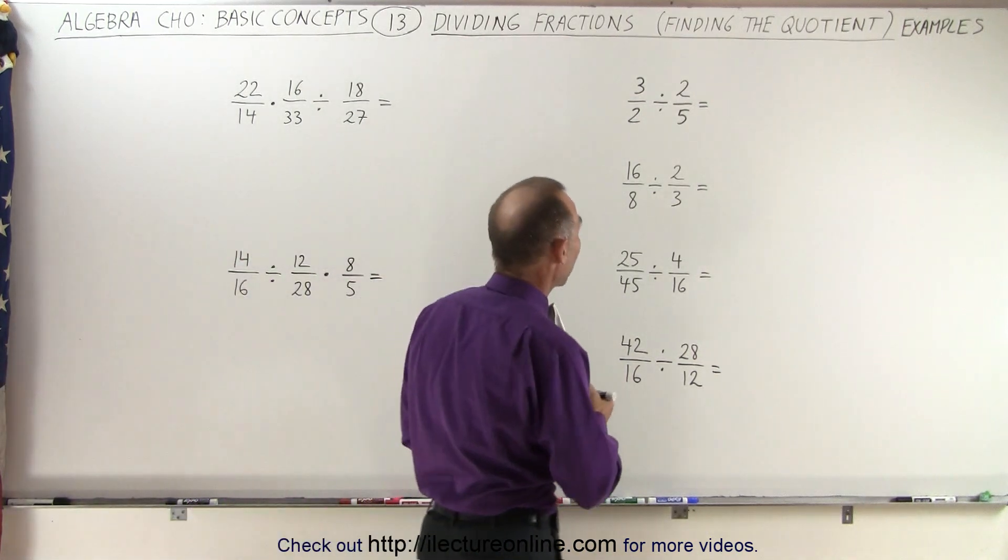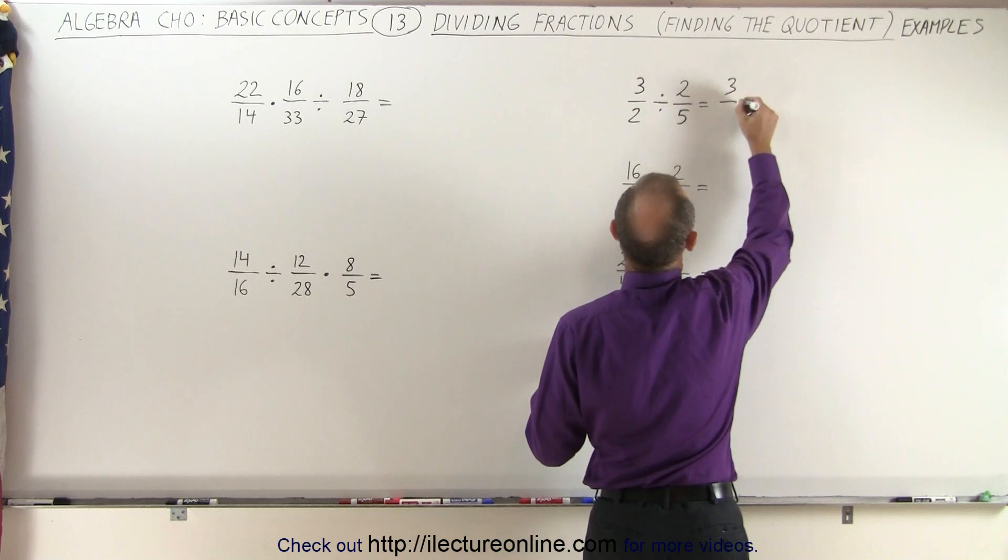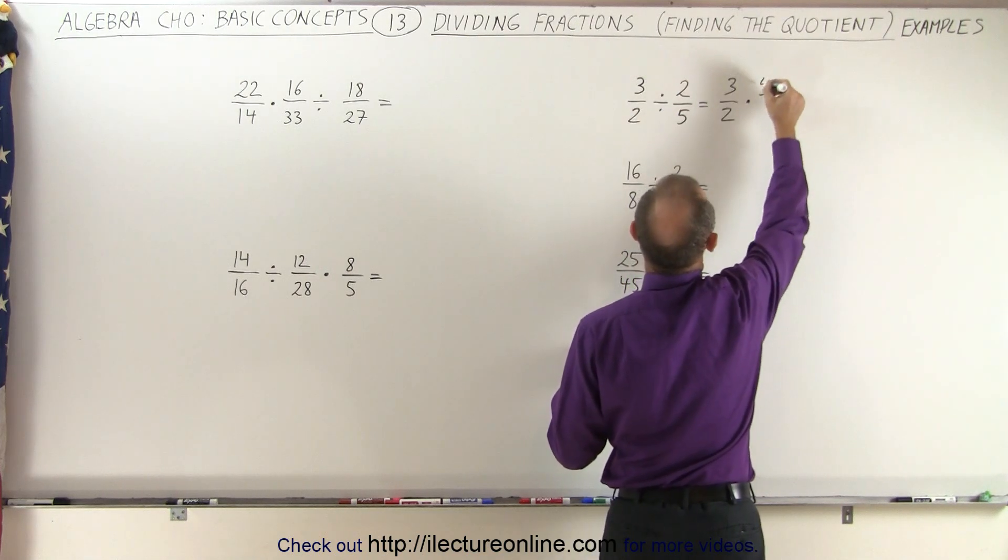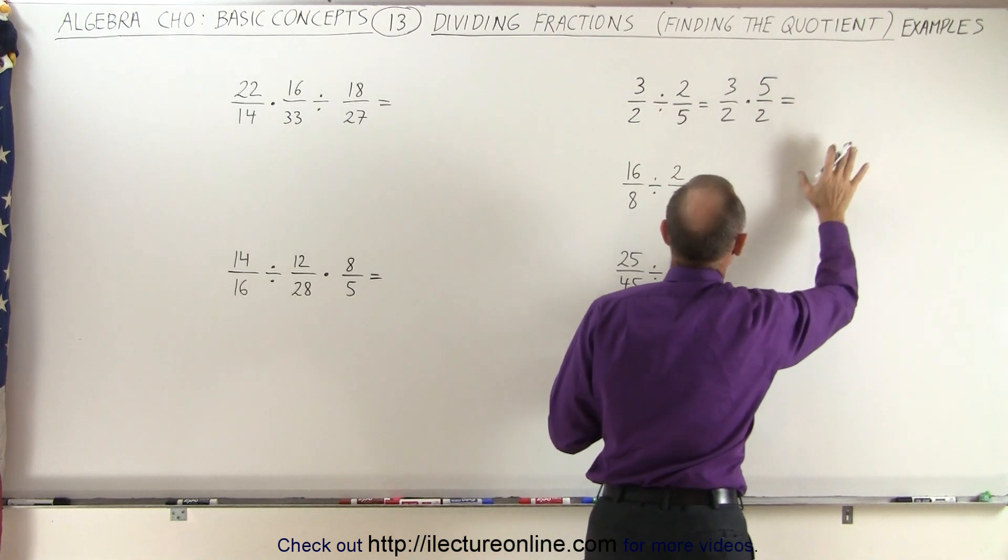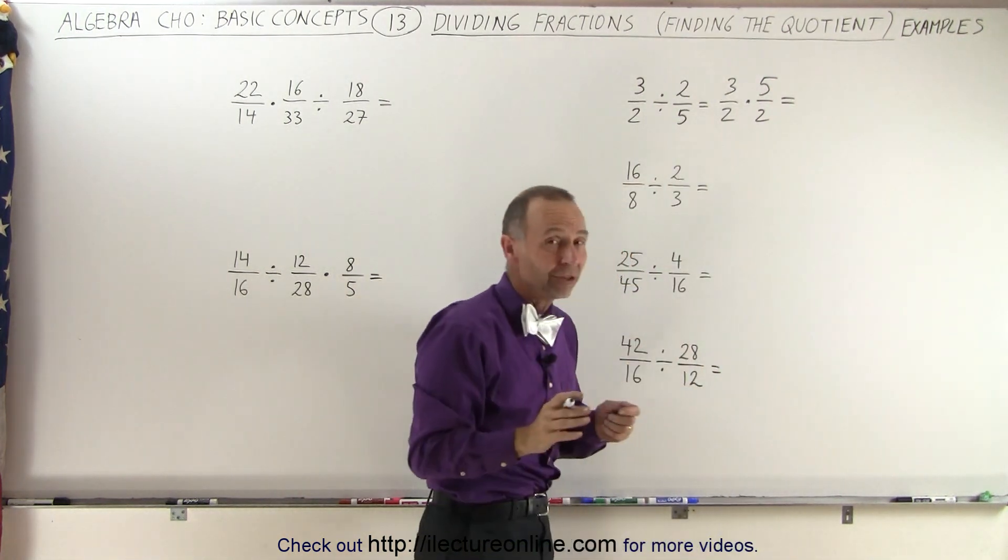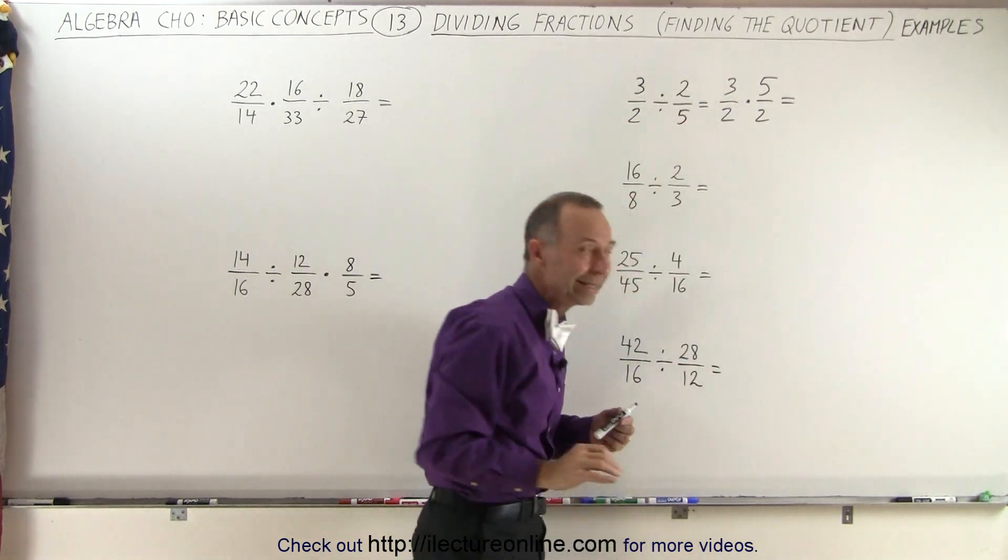So in this case, we have three halves divided by two fifths, so this can then be written as three over two times the inverse, which would be five over two. Now before we continue on, what you have to be careful of is not to think, oh, you see a two over here, you see two over there, let's just go ahead and cancel that.